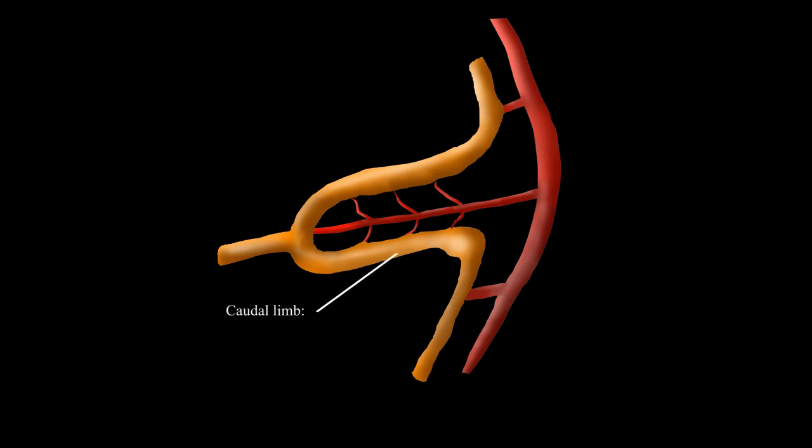The caudal limb of this midgut extension will ultimately form the distal ilium, cecum, appendix, ascending colon, and two-thirds of the transverse colon.